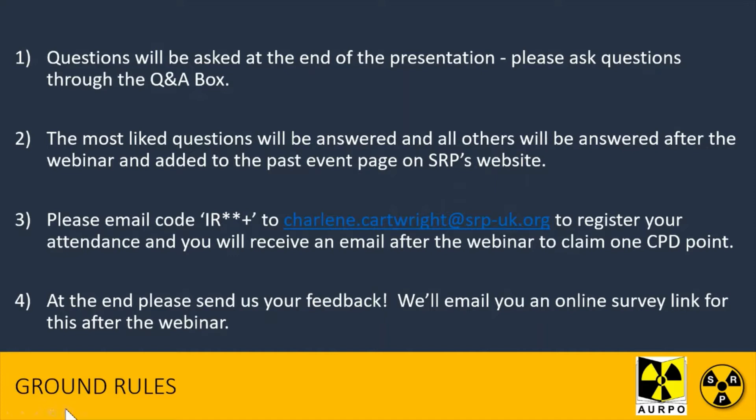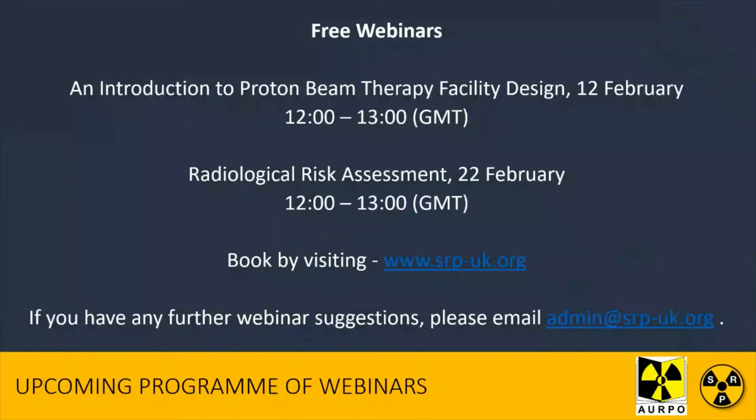In terms of registering your attendance and being able to claim CPD points, please email Charlene — her email address is on the screen — using the email code IR** plus. That will be used to give you an email confirmation showing the CPD points you've claimed today. It's really essential that we get a feel for how well these webinars are working, so there'll be an online survey link sent to you after the webinar — please fill that in.